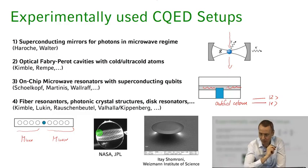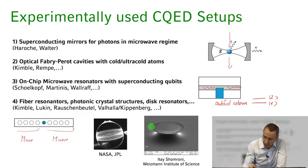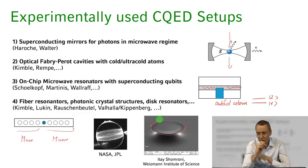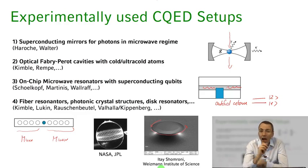A similar setup has been used by Kerry Vahala's group and Tobias Kippenberg's group using toroidal microdisc resonators — quartz glass forming beautiful toroidal micro-resonators where the light field propagates almost losslessly in a very tightly confined ring structure around the rim, with a size of a few tens of micrometers. You can then couple this light field to an atom brought close to the rim of this micro-toroidal resonator.